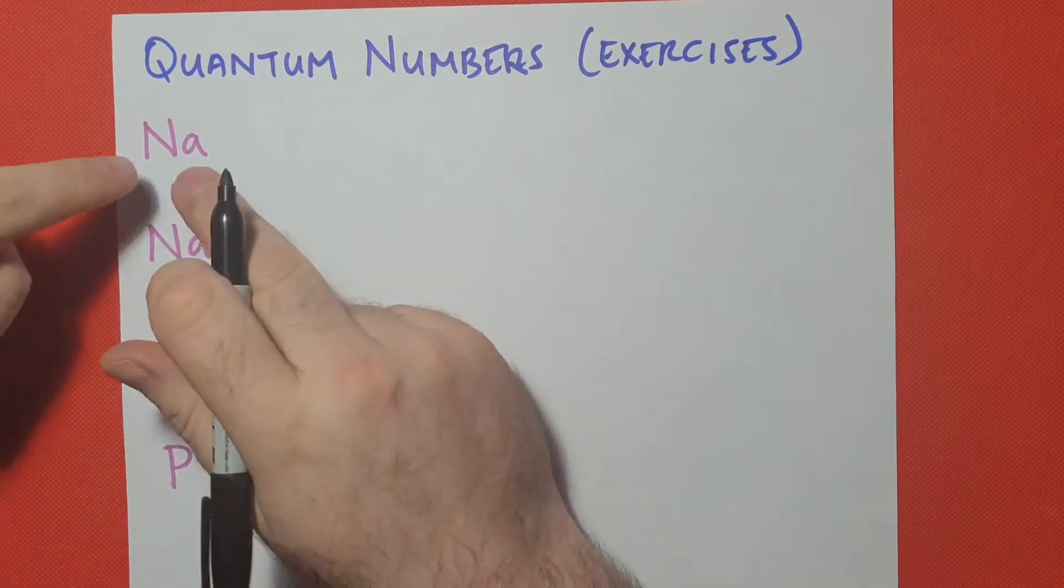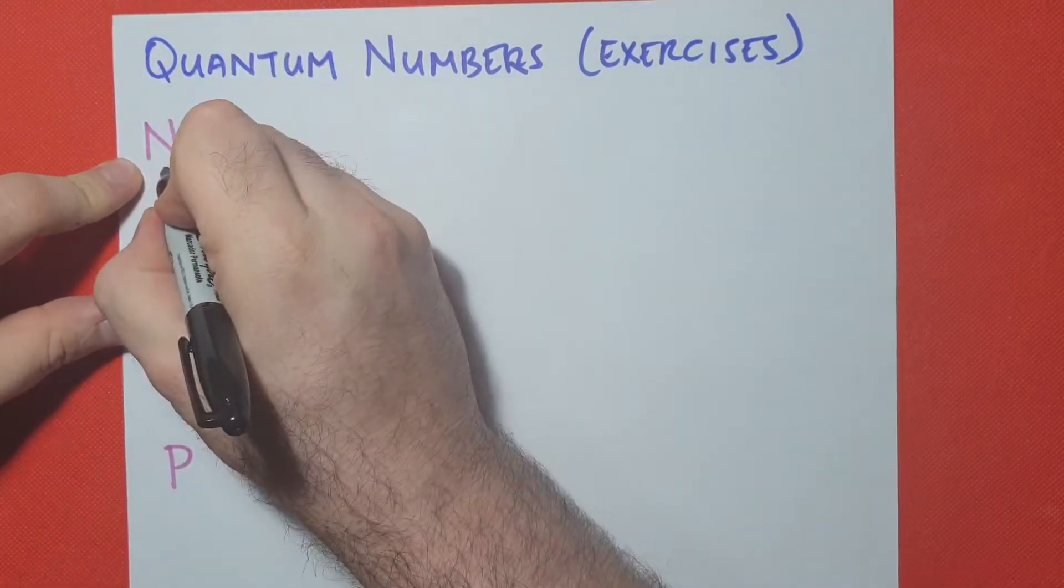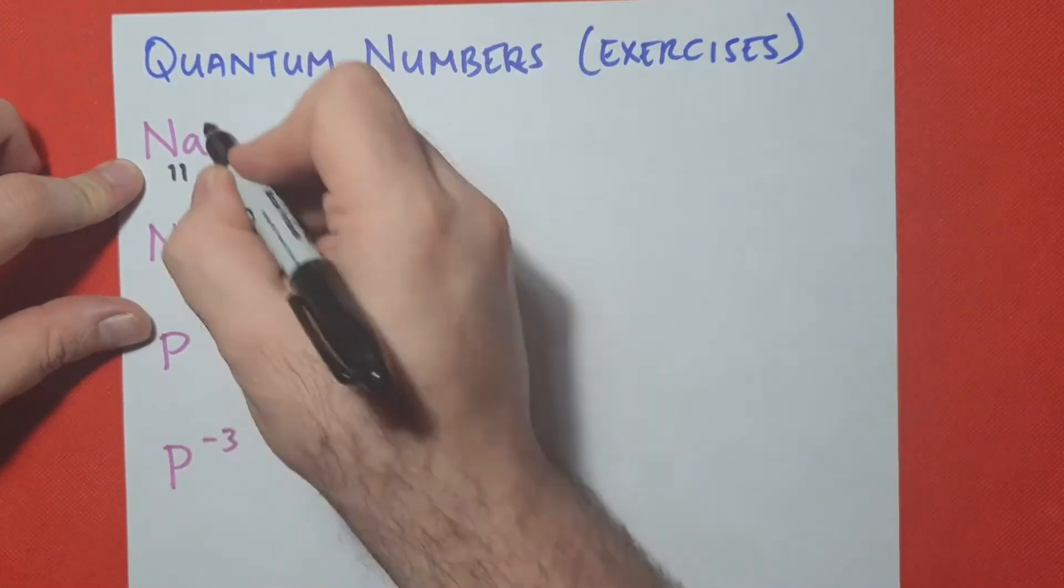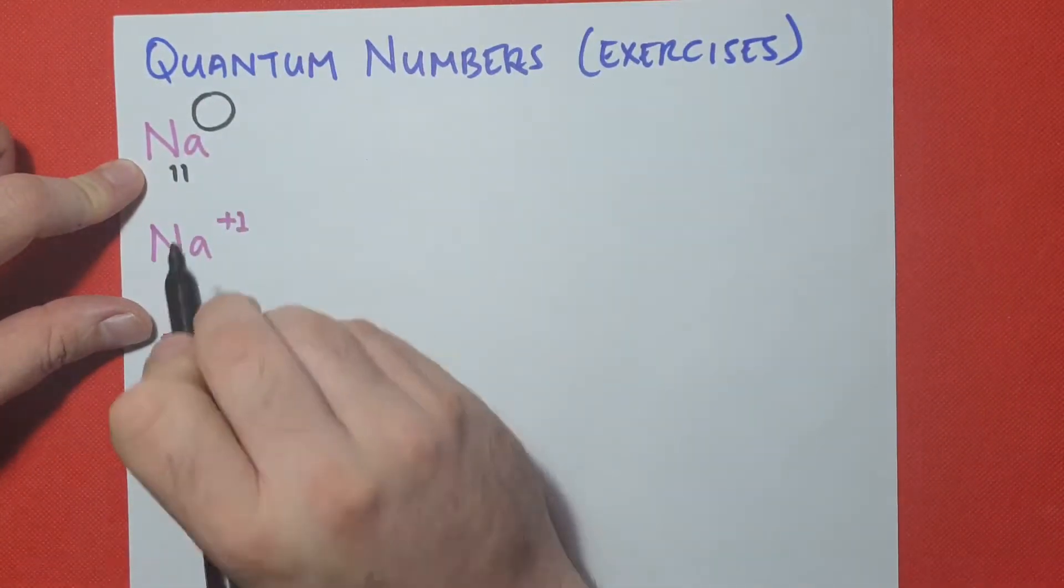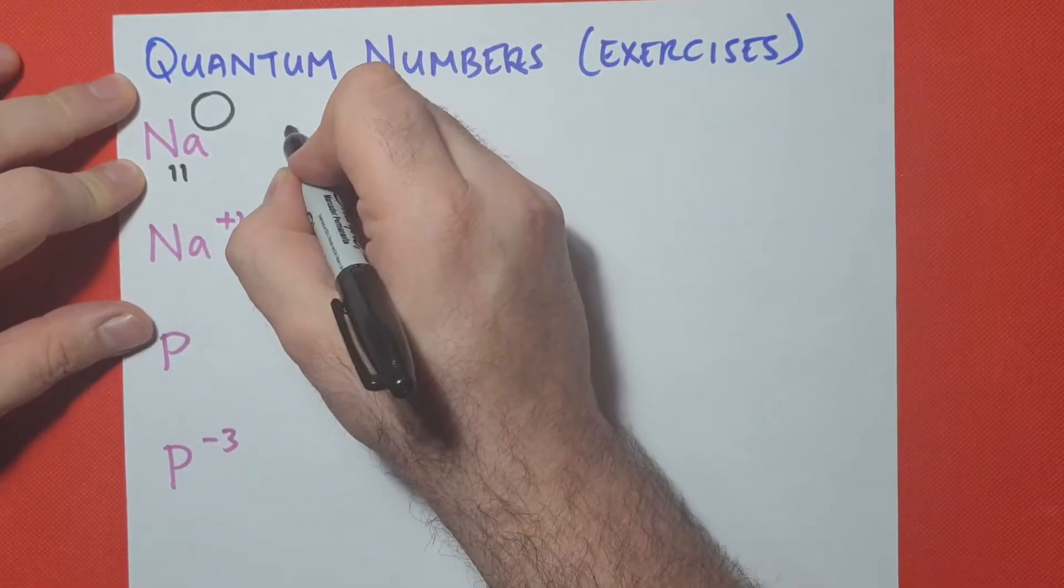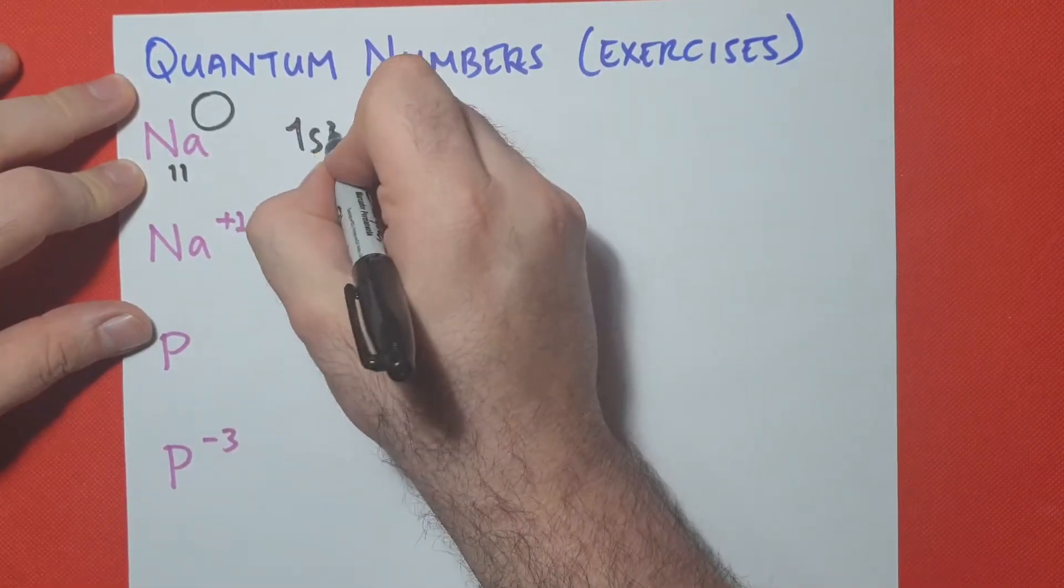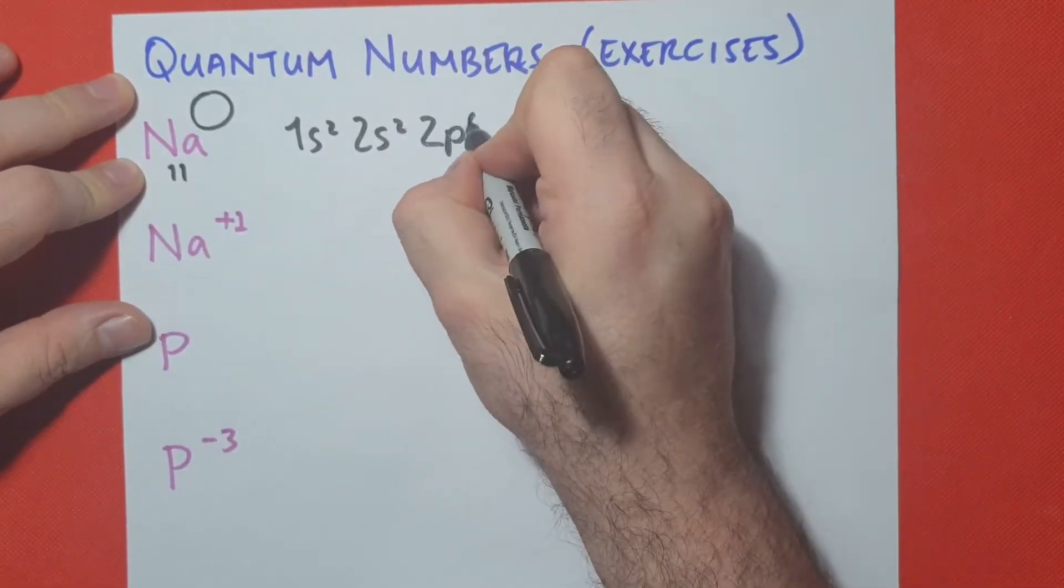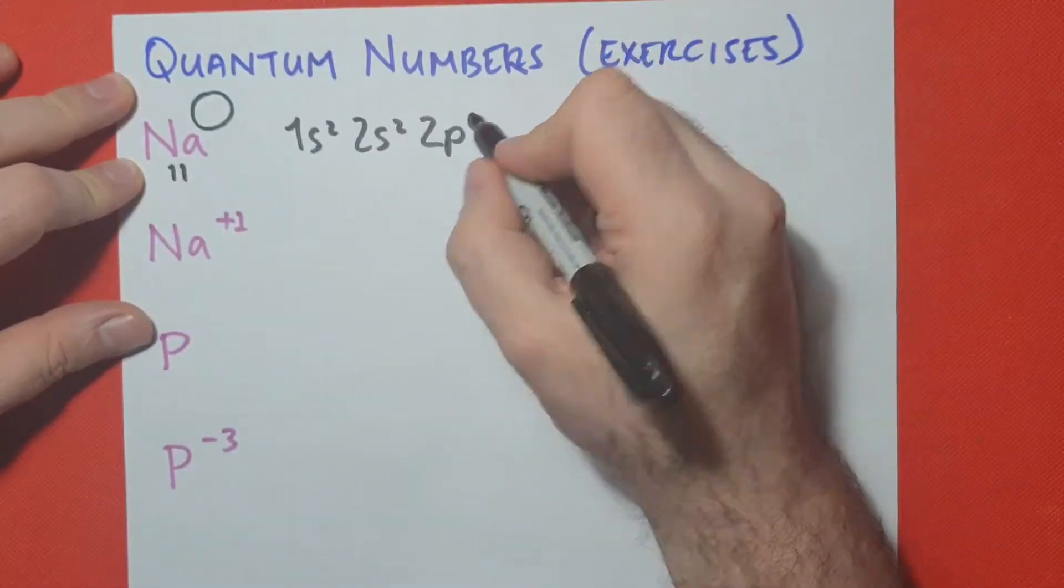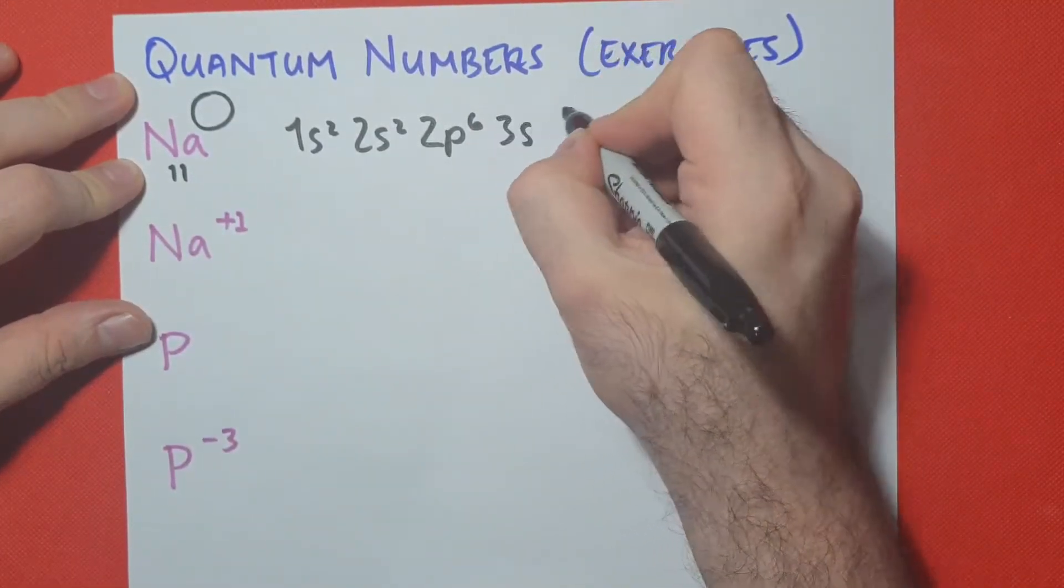So we have sodium, and remember sodium's atomic number is 11. So that means that in its neutral form, because it has no charge up here, it has also 11 electrons. So looking at our aufbau diagram, we create our configuration, 1s2, 2s2, 2p6, 246 is 10, and we're missing one electron. So our next level is 3s1.